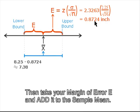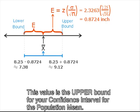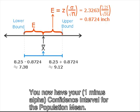Then take your margin of error E and add it to the sample mean. This value is the upper bound for your confidence interval for the population mean. You now have your 1 minus alpha confidence interval for the population mean.